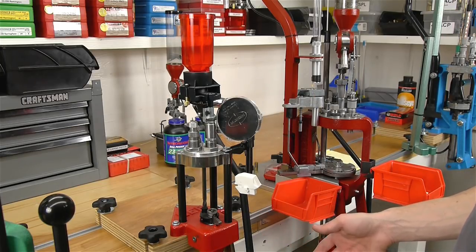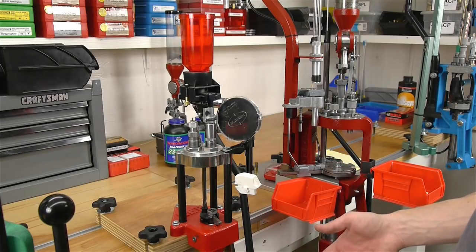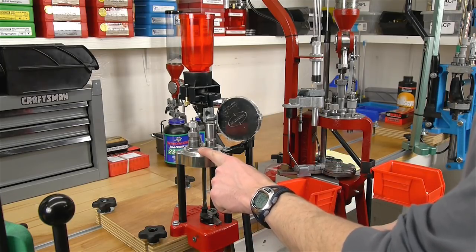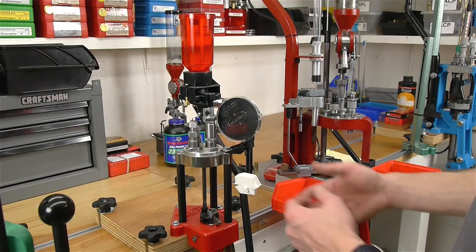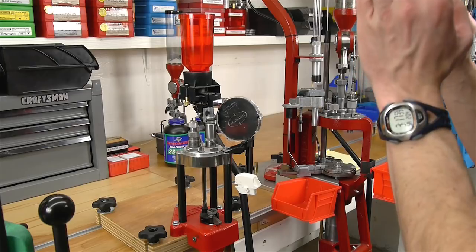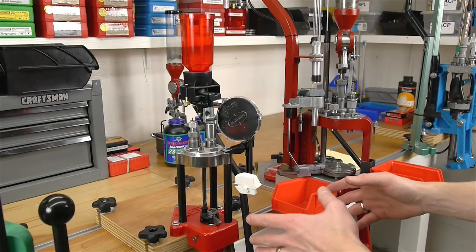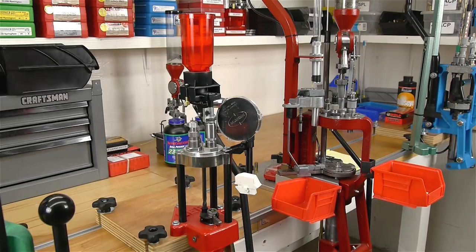This press is also going to be cost effective. It's going to be just a little bit more money than a single-stage press. You will have to buy a tool head for each set of dies that you want to set up, but for this particular press that's really not a big deal. So we've seen the single-stage and we've seen the turret press. Let's now take a look at an auto-indexing progressive reloading press.